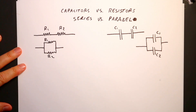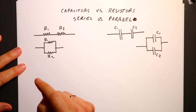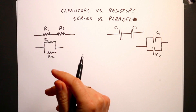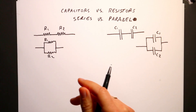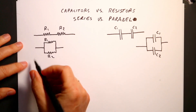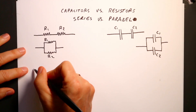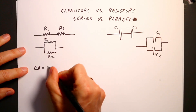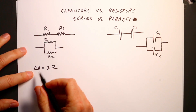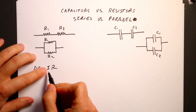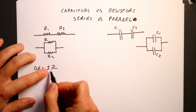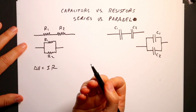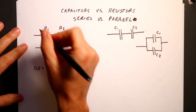Let's start with resistors in series. Ohm's Law says that delta V equals I times R. The voltage across some resistor is equal to the product of the current going through that resistor and the value of the resistor. I should define series first.